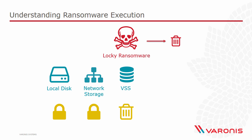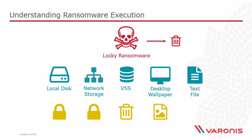It goes further than that. It then goes and sets the desktop wallpaper to an image with instructions about demanding the ransom. And finally it also drops a text file on the file system with instructions about payment. That text file then appears next to encrypted files in the hope that the victim will open it up, follow the instructions, and pay the ransom.